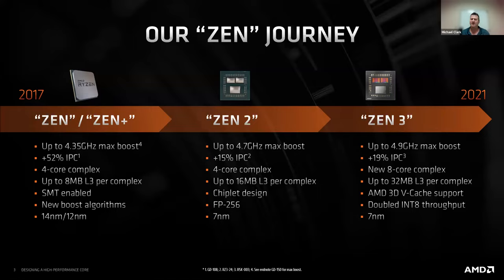Our original Zen had a 128-bit floating point data path even though it supported instructions that had 256-bit vectors. With Zen 2, we built the data path out to the full vector width of the ISA. It leveraged that 7 nanometer transition and all those extra transistors to really deliver that 15% IPC boost.